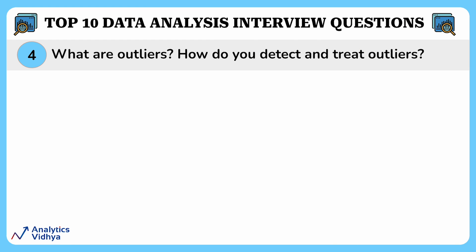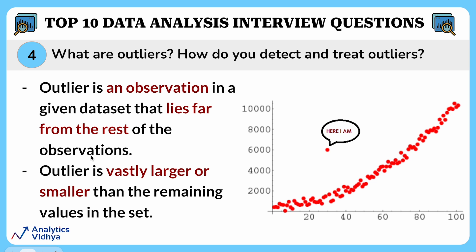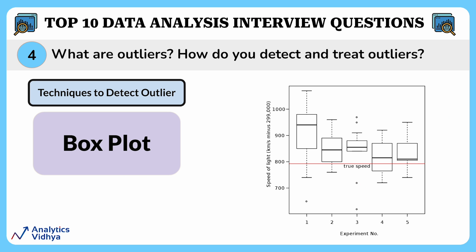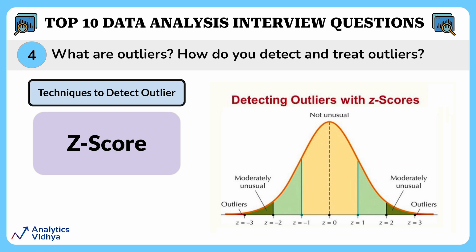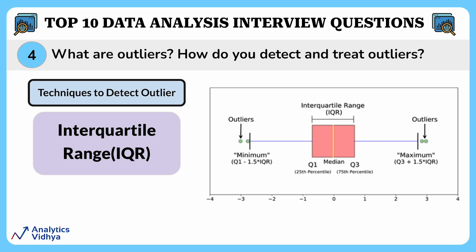This question is: what are outliers, and how do you detect and treat outliers? An outlier is an observation in a given dataset that lies far from the rest of the observations — it is vastly larger or smaller than the remaining values in the set. In simple words, outliers are extreme values that might not match with the rest of the data points. To detect outliers, there are a few ways: the first is a box plot, the second technique is z-score, and then there's interquartile range.